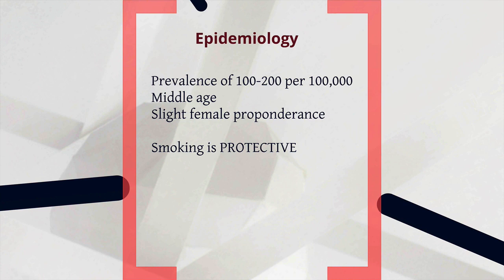Starting with epidemiology, ulcerative colitis is a common condition and you'll certainly see it in your practice as a junior doctor, both in a medical and a surgical setting. The prevalence is roughly 150 per 100,000. The typical patient will be middle-aged, either male or female, but there's a slight female preponderance. Notably, smoking is in some ways protective for UC, in contrast to Crohn's disease where smoking is a risk factor.